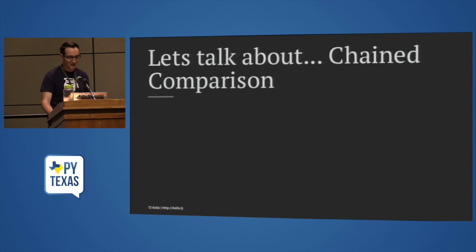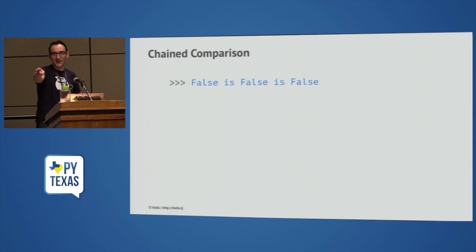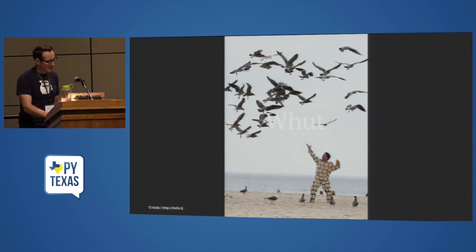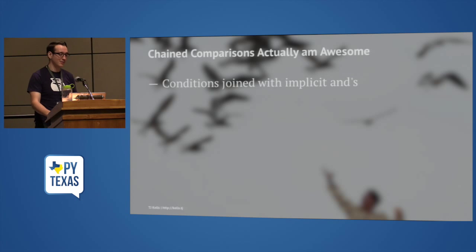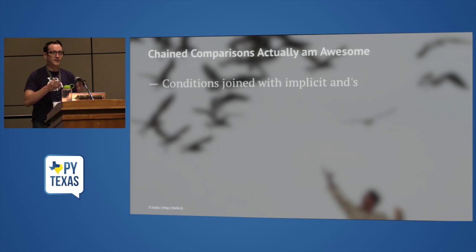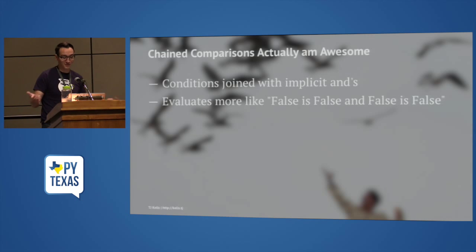Let's talk about chain comparisons. 'False is False is False' — one confident person knows what this evaluates to. False is False is False is obviously false... right? What? So this is actually called chain comparisons, and they're actually really awesome. If you break that down into multiple statements, those statements are implicitly joined with 'and's.